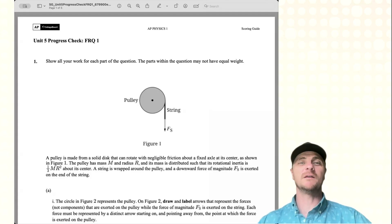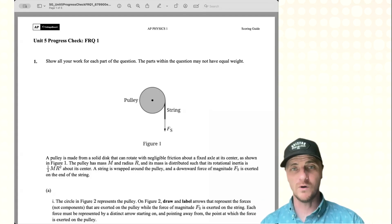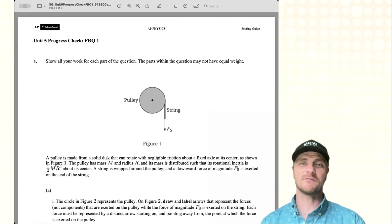AP Physics 1, welcome in. It's Mr. Heinrich. Good to see you guys, and we're looking at Unit 5 FRQ 1 from the AP Classroom Progress Checks. Let's take a look at what's going on.